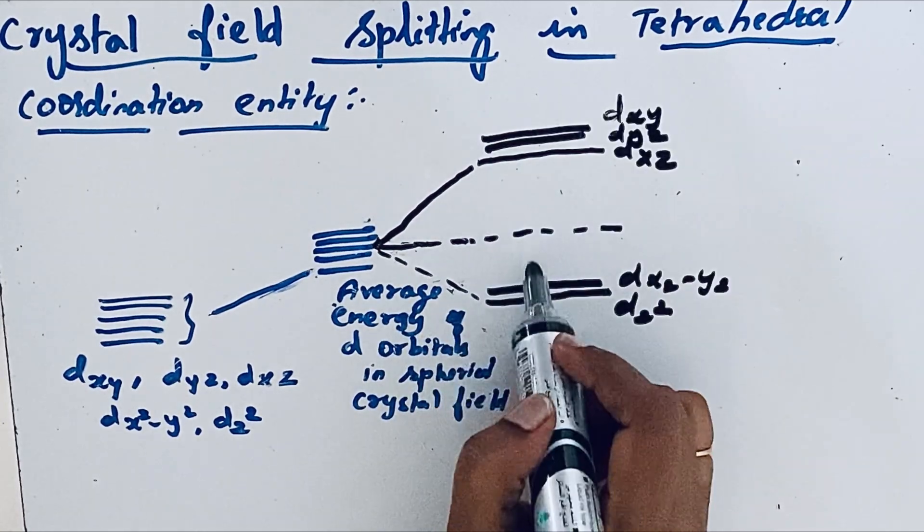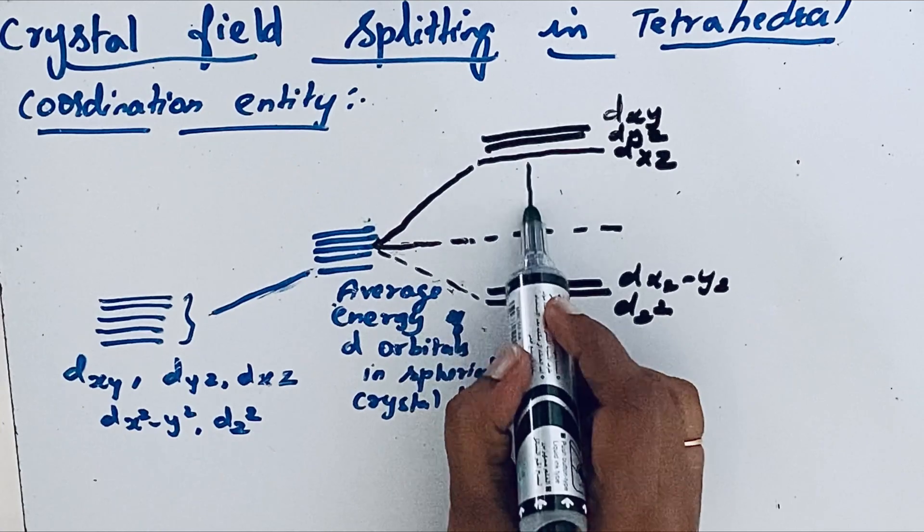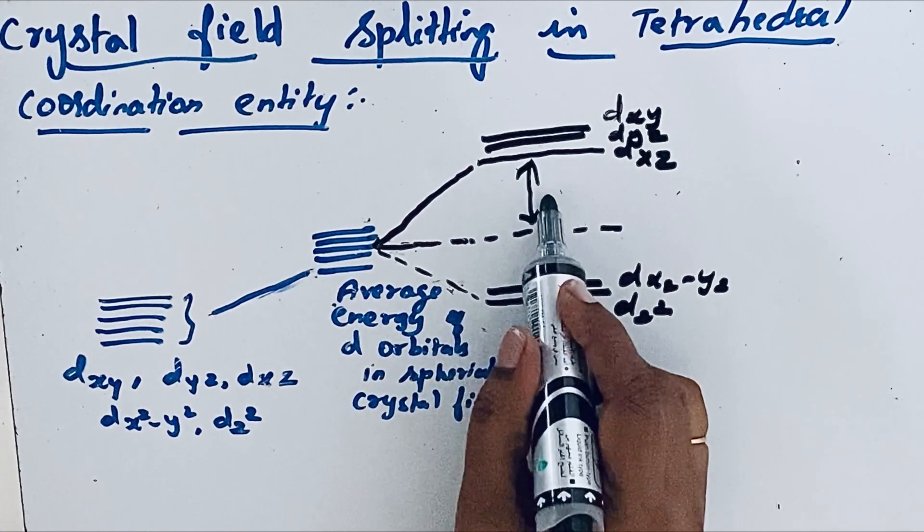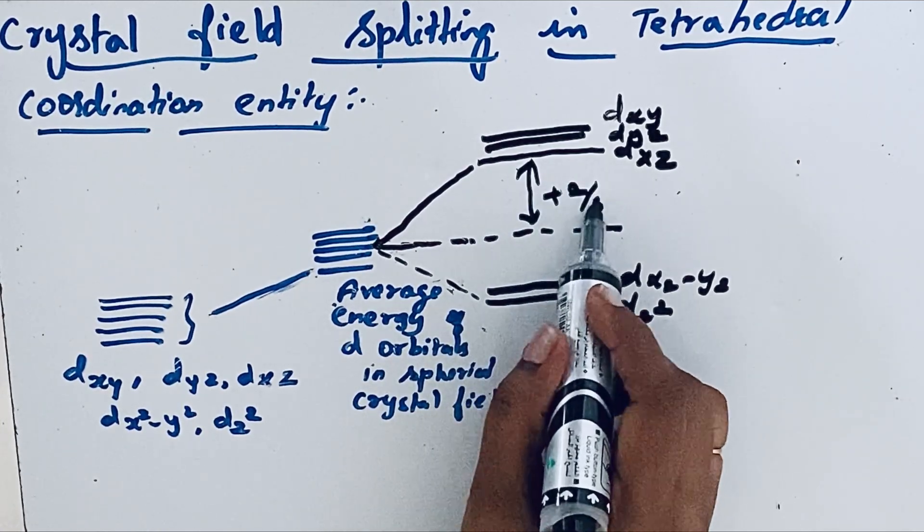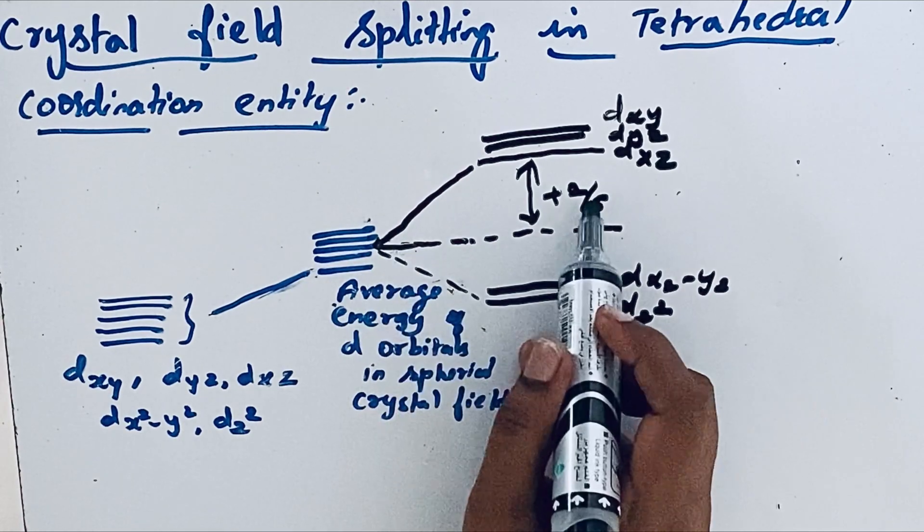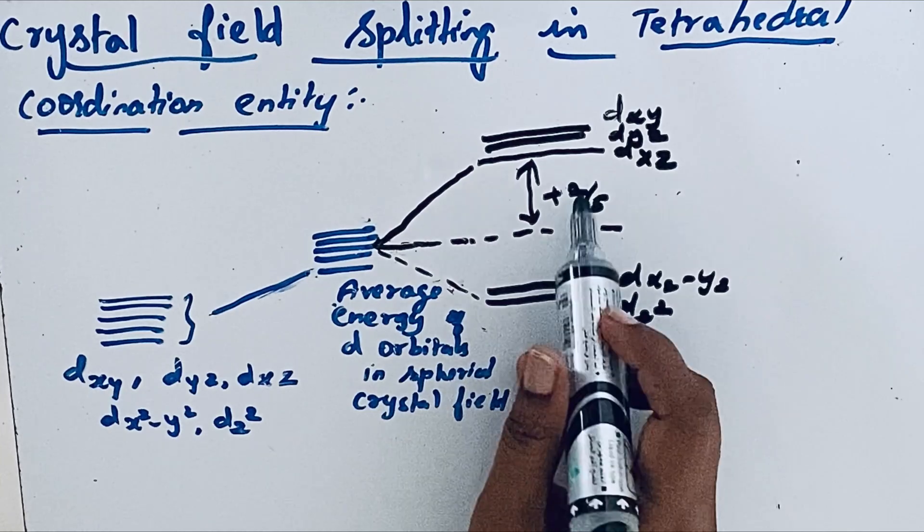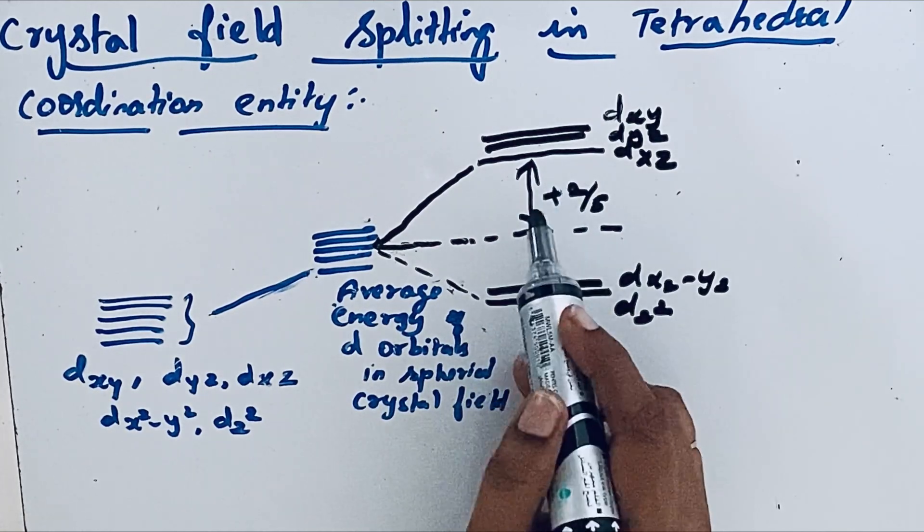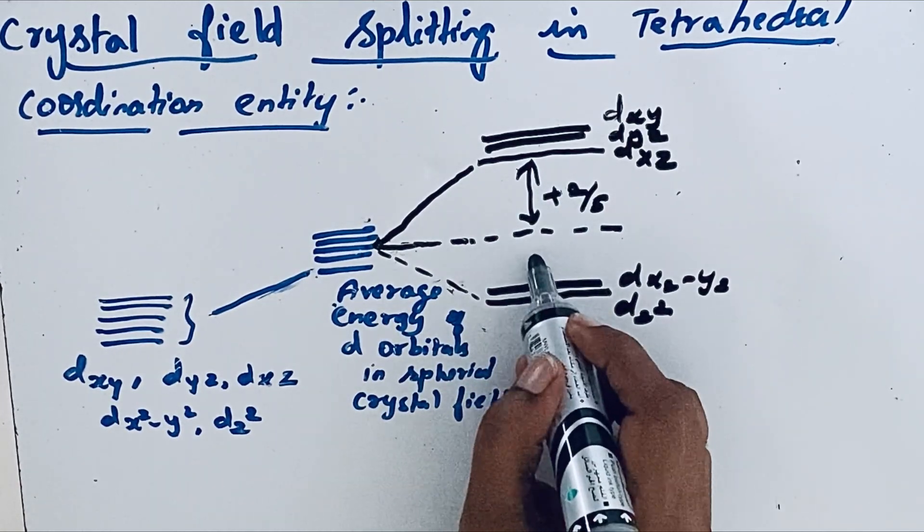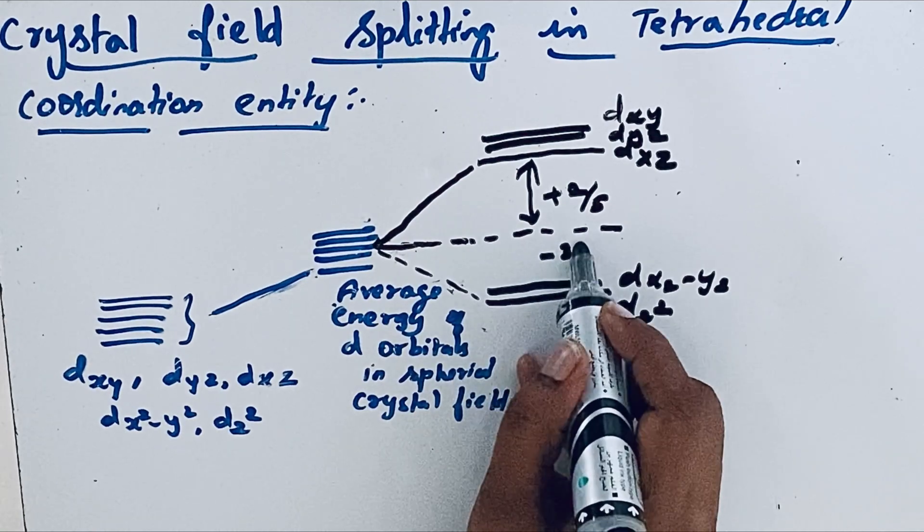When compared to this one here, it is increased by plus two by five. Why five? There are five d orbitals increased. Two compared to these two orbitals increased, so plus two we are using. Then what about here? Here we will use minus three by five, decreased by these three orbitals. So minus three by five.